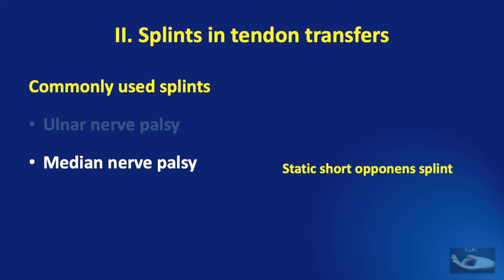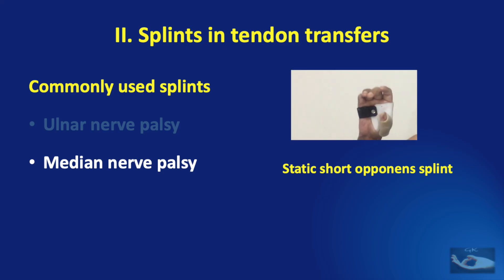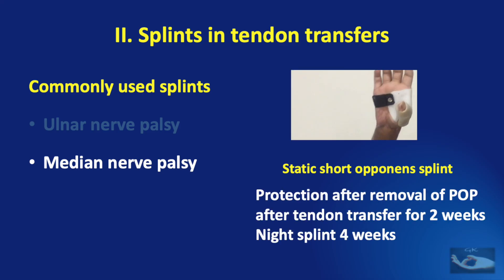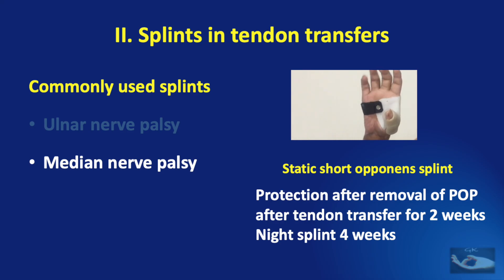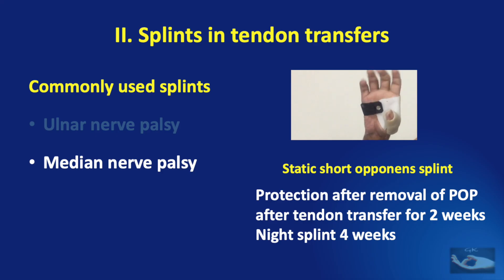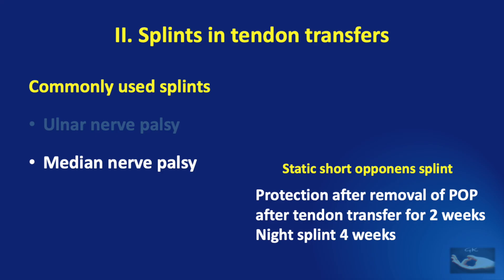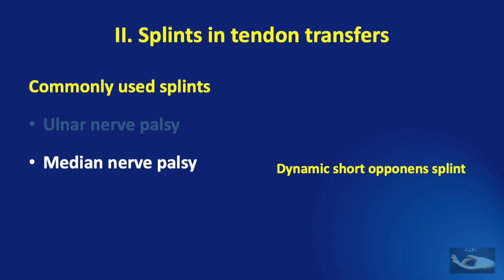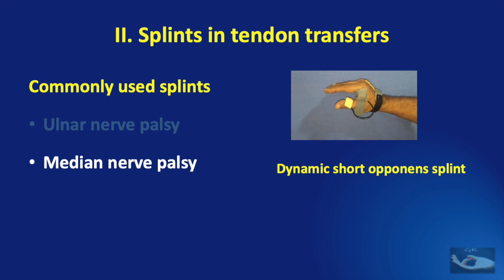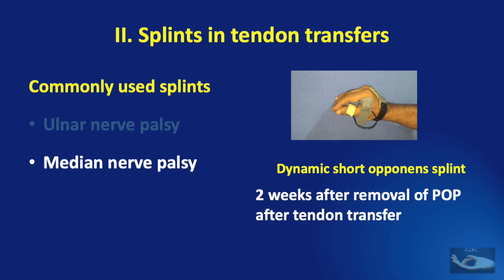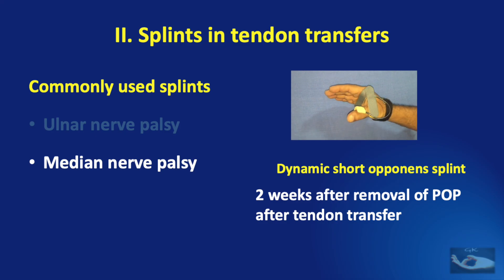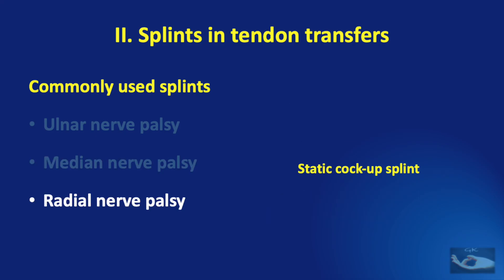In median nerve palsy, the static short opponent splint is used for protection after removal of the POP following tendon transfer and is used for 2 weeks. It is continued as a night splint for a total of 4 weeks. The dynamic short opponent splint is used for a further 2 weeks after removal of the POP to strengthen the transferred tendons.